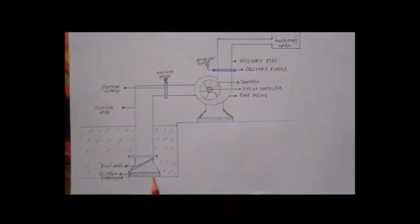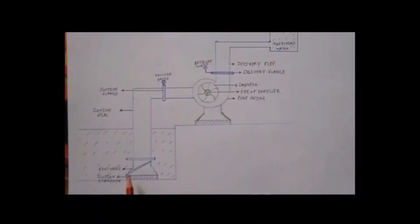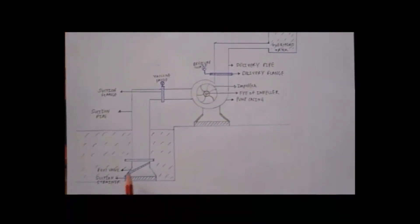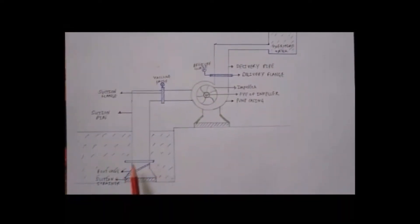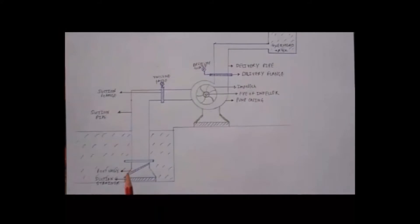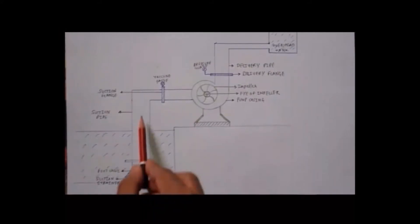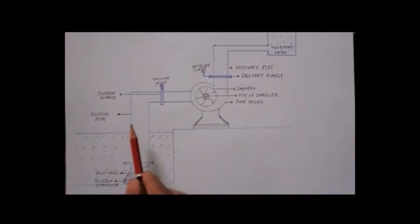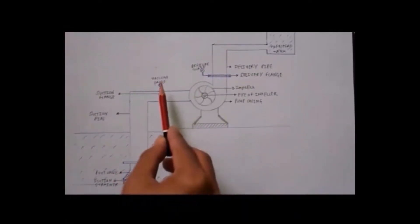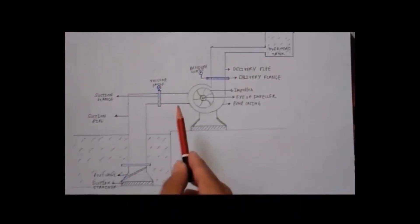Let's see how a centrifugal pump works. First, let us identify the components. This is a suction strainer. Water enters through it and it strains away all the foreign materials or dust particles. Water goes into the foot valve, which opens up when pressure increases. Water goes through the suction line, this is a suction pipe. This is a vacuum gauge which shows pressure at that point.